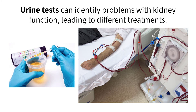If someone is experiencing kidney failure, the two options for treatment are renal dialysis or a kidney transplant. Within the process of renal dialysis, also called hemodialysis, blood is moved from an artery into a dialysis machine that filters blood like an artificial kidney using semi-permeable membranes to catch large proteins and blood cells.